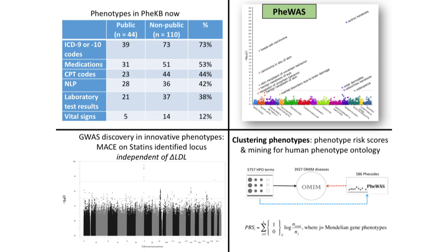This is the data in FKB — among the 154 phenotypes, most of them are using billing codes, but a lot of them — about 42% — are using some sort of text mining. That relates to the innovative kinds of phenotypes we've done that highlight the value of the EHR.